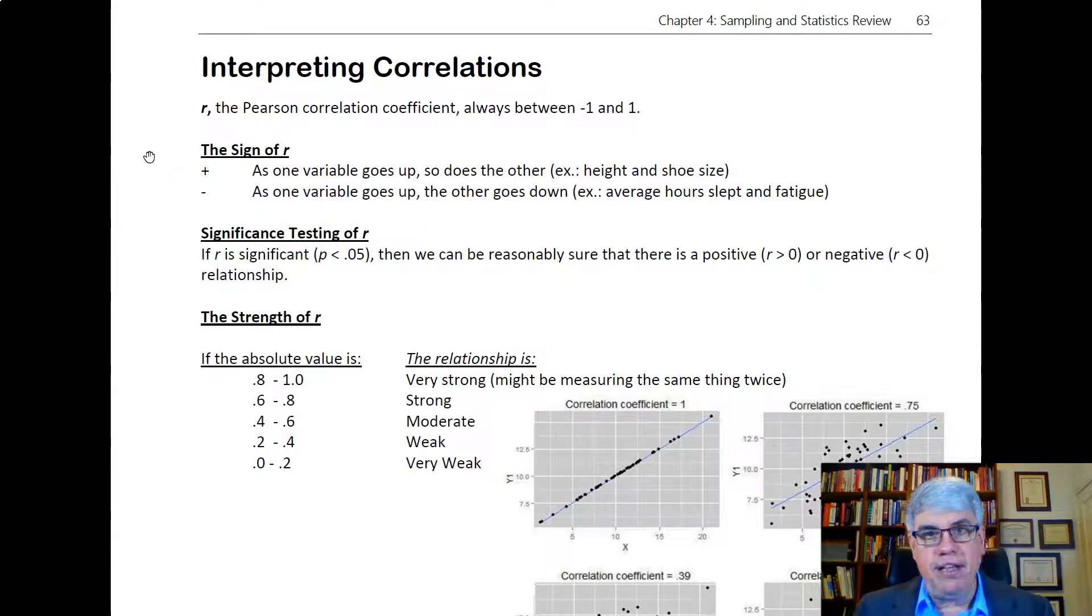If it's not significant, that means maybe it's zero. We're not sure it's negative or we're not sure it's positive. We don't really know what direction it goes. So a significant r means that we can be sure of the direction that it goes in.